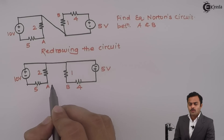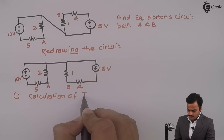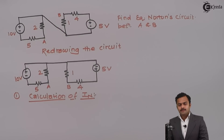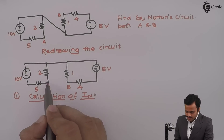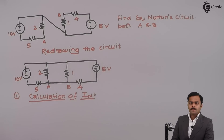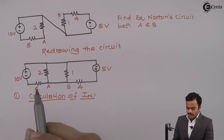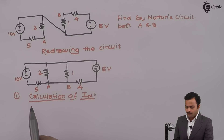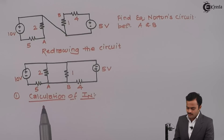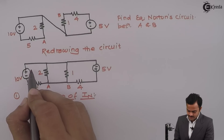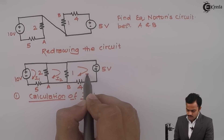Step number one is calculation of IN. For that we need to connect points A and B by a short circuit link, and find the current flowing through it. For this purpose I will use mesh analysis, because mesh analysis is the simplest technique while solving Norton's theorem. There are three loops, so I get three currents: I1, I2, and I3.